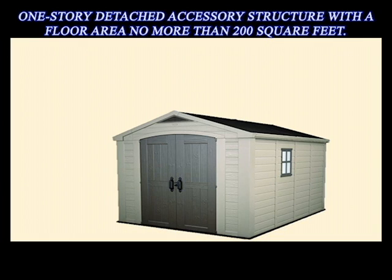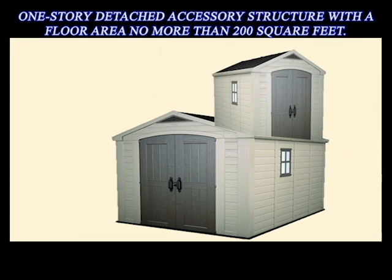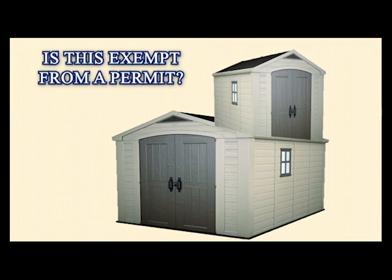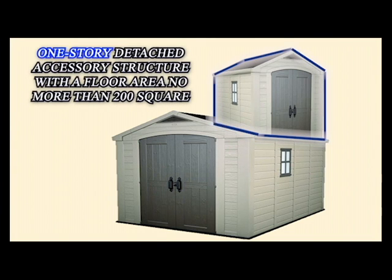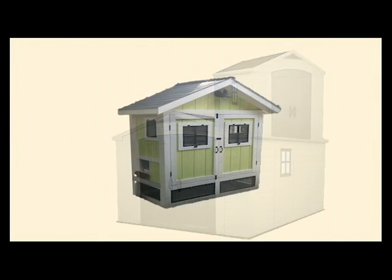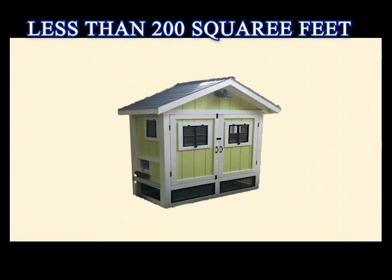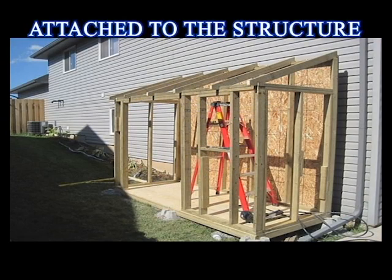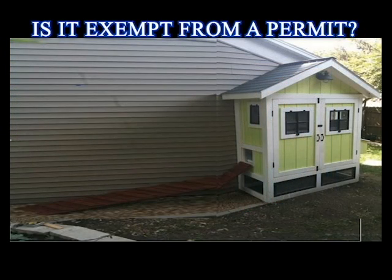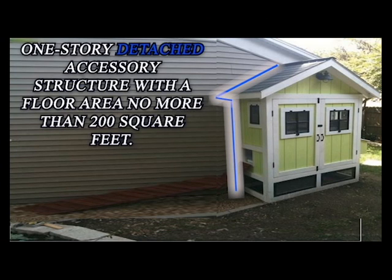Let's look at examples. Would a structure be exempt from a permit if it is less than 200 square feet but multi-story? Unfortunately not — the exemption is for one-story structures. How about a less than 200 square foot single-story structure that will be attached to the house? Is it exempt from a permit? Unfortunately not — the exemption is for detached structures. Therefore, a permit is required.